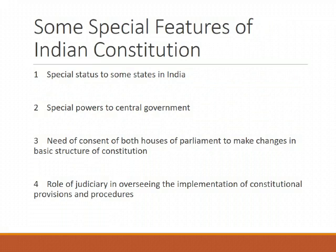Some special features of the Indian Constitution: as mentioned earlier, in a Federation, both levels of government are not given equal powers. Thus, all states in the Indian Union do not have identical powers. Some states enjoy a special status. For example, Jammu and Kashmir has its own Constitution. Many provisions of the Indian Constitution are not applicable to this state without the approval of the State Assembly. Indians who are not permanent residents of this state cannot buy land or a house there. Similar special provisions exist for some other states of India as well.